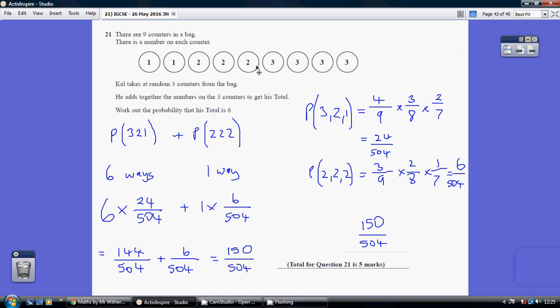I could get a 3, 2 and a 1, any order, or I could get a 2, 2, 2. Right, so let's just start off by imagining it wasn't any order, but just imagine we wanted to get specifically a 3, then a 2, then a 1.